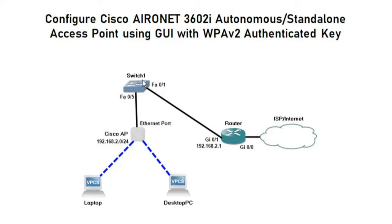This is a Layer 3 switch, so all ports belong to VLAN 1. The Cisco access point is connected to the FastEthernet 0/5 port of the switch. The access point is getting its IP from the DHCP pool created in the Cisco router on the 192.168.2.0/24 network, with a default gateway of 192.168.2.1. Once all configuration is done, we'll connect the laptop and desktop PC to the wireless interface and check internet connectivity.